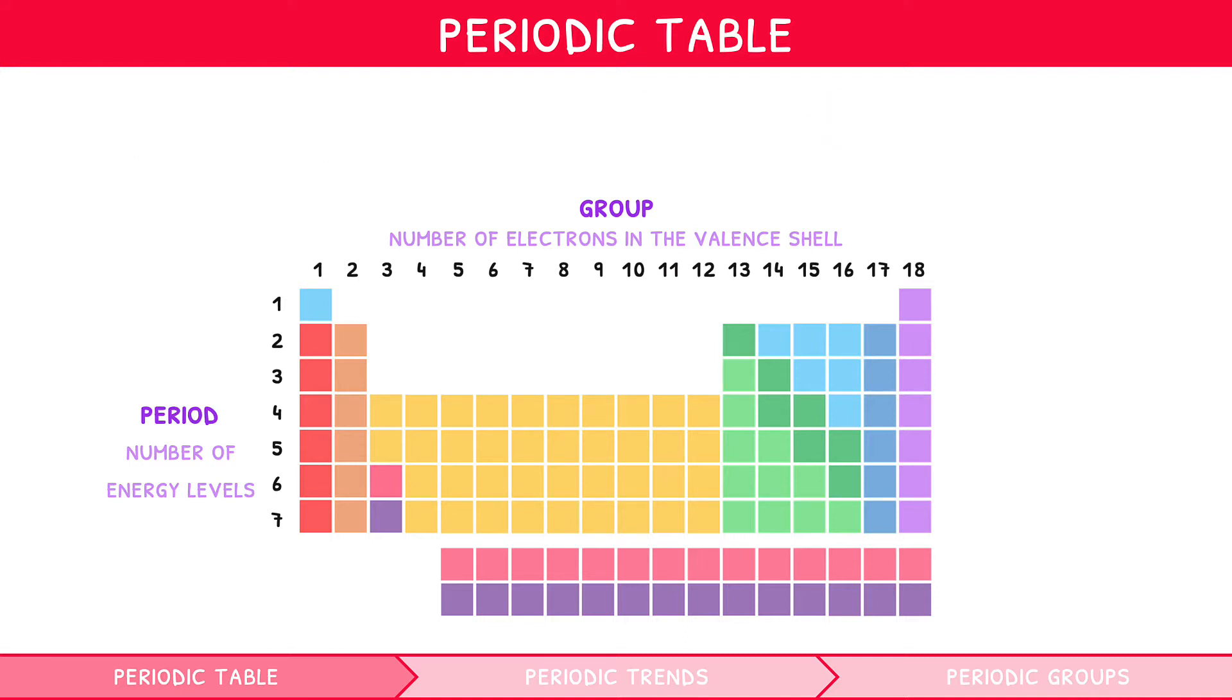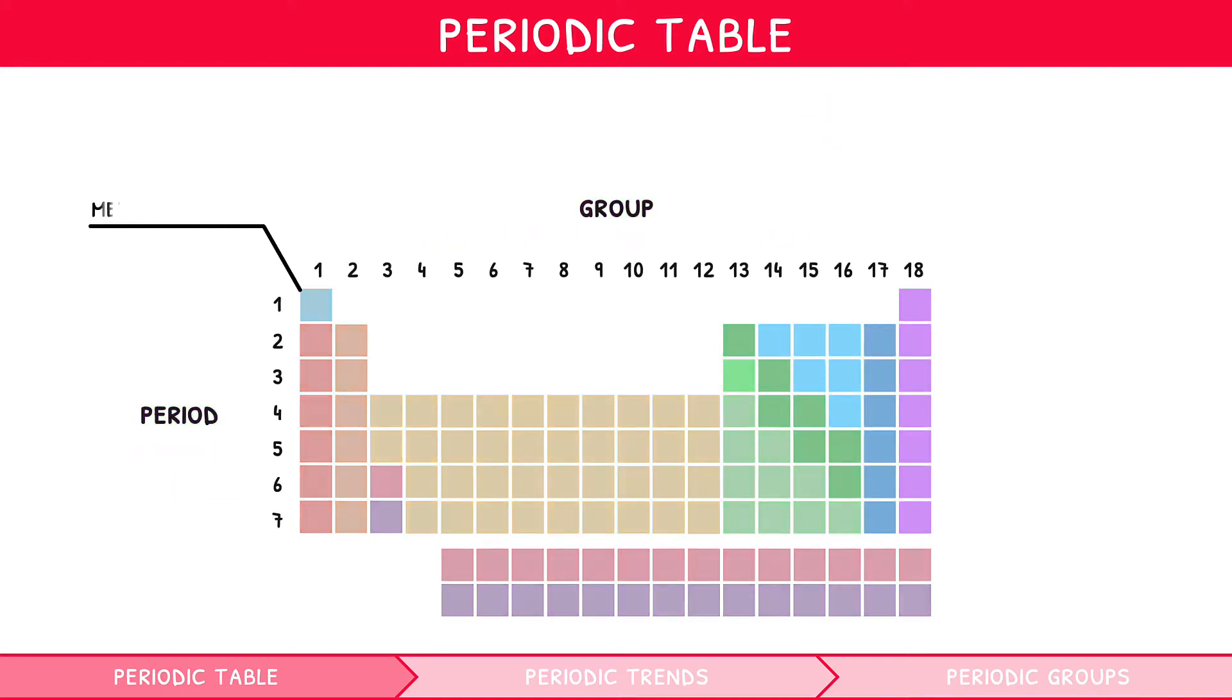When looking at the periodic table, we can see that metals are generally found on the left side, and non-metals on the right side. Metalloids, which are a class of element somewhere in between metals and non-metals, are found between these two.